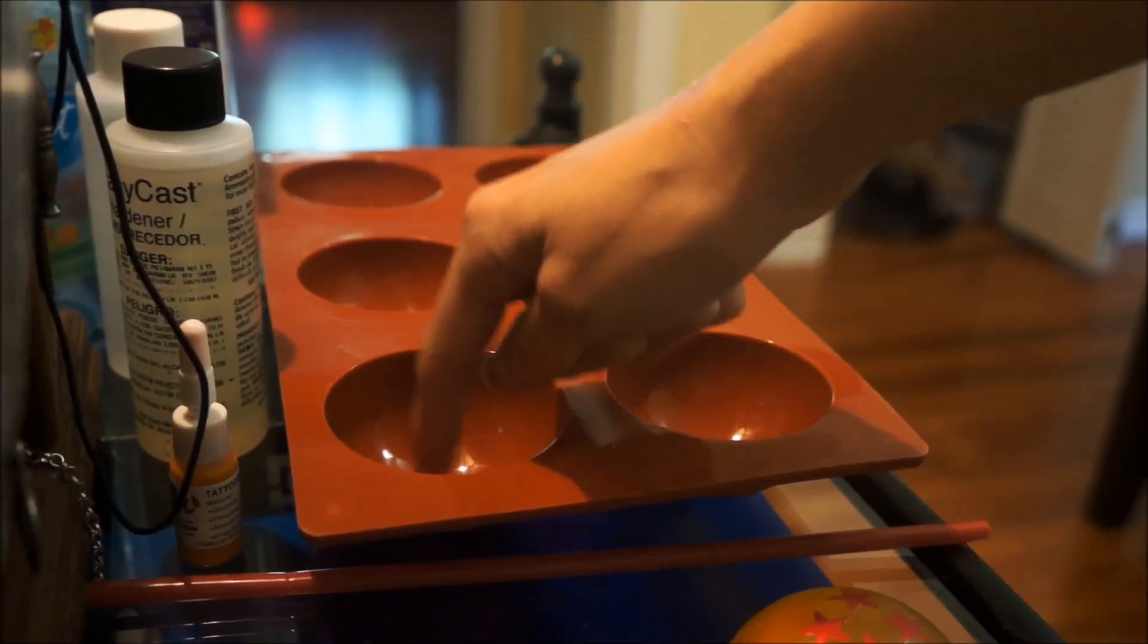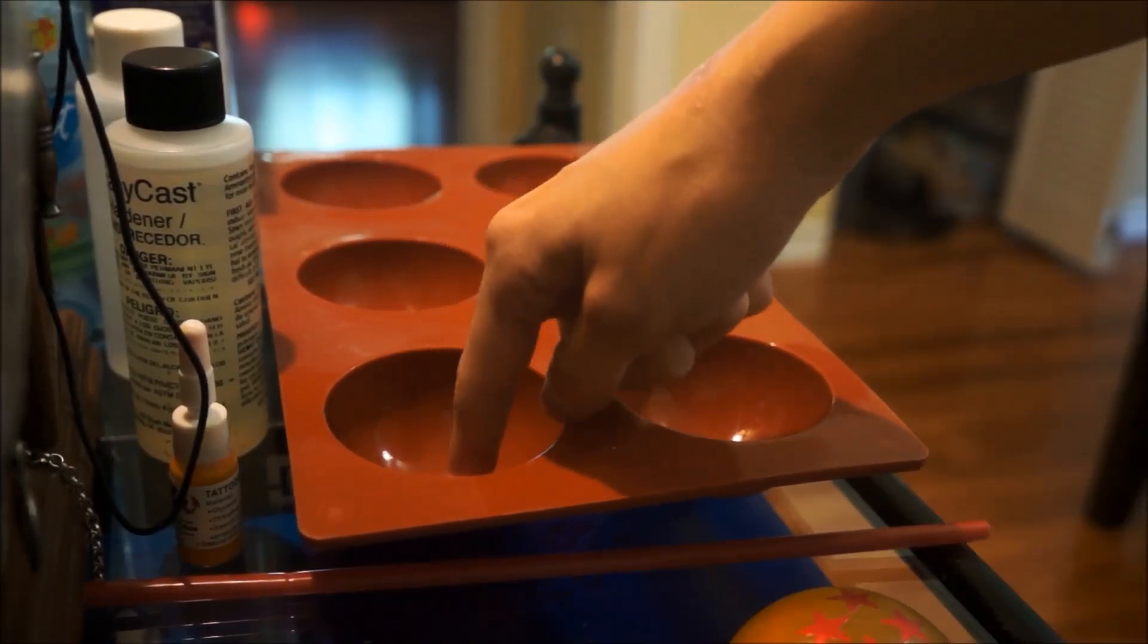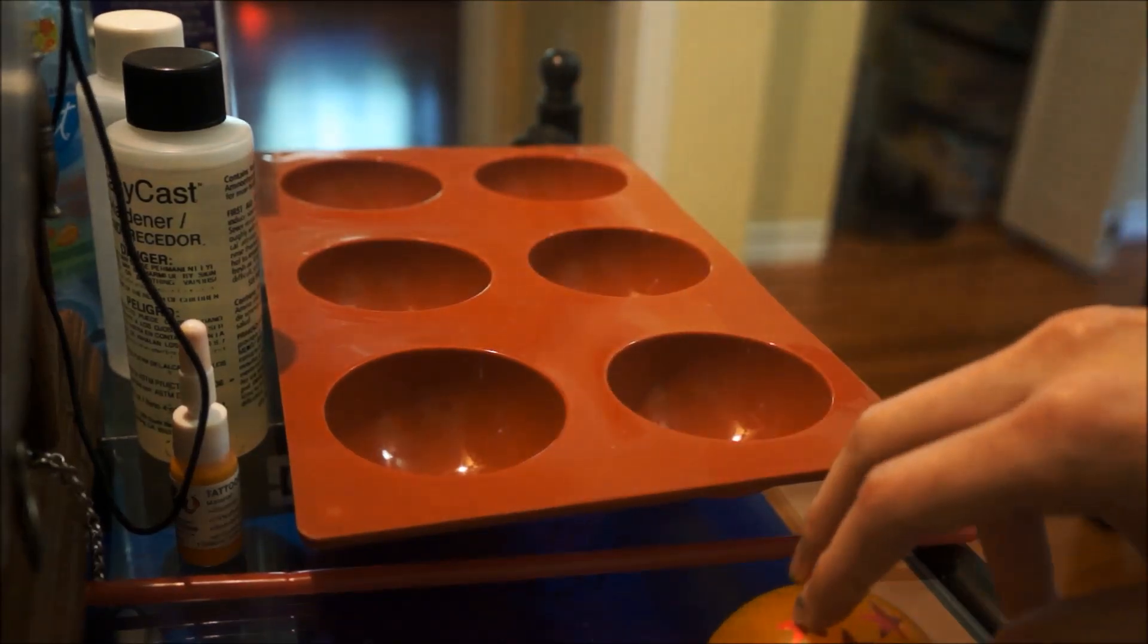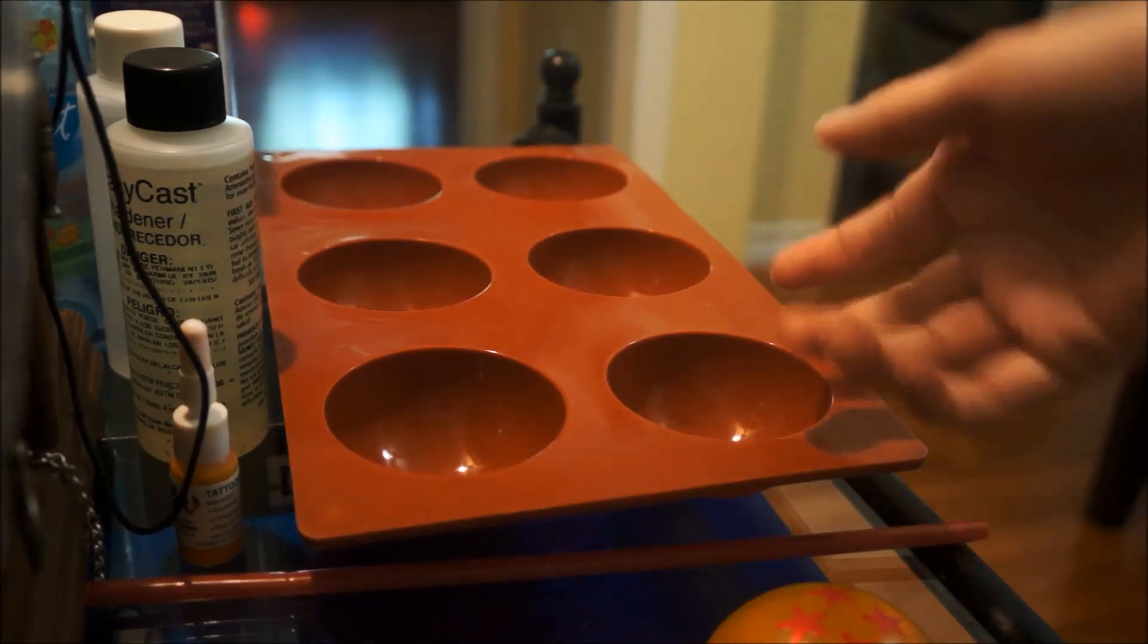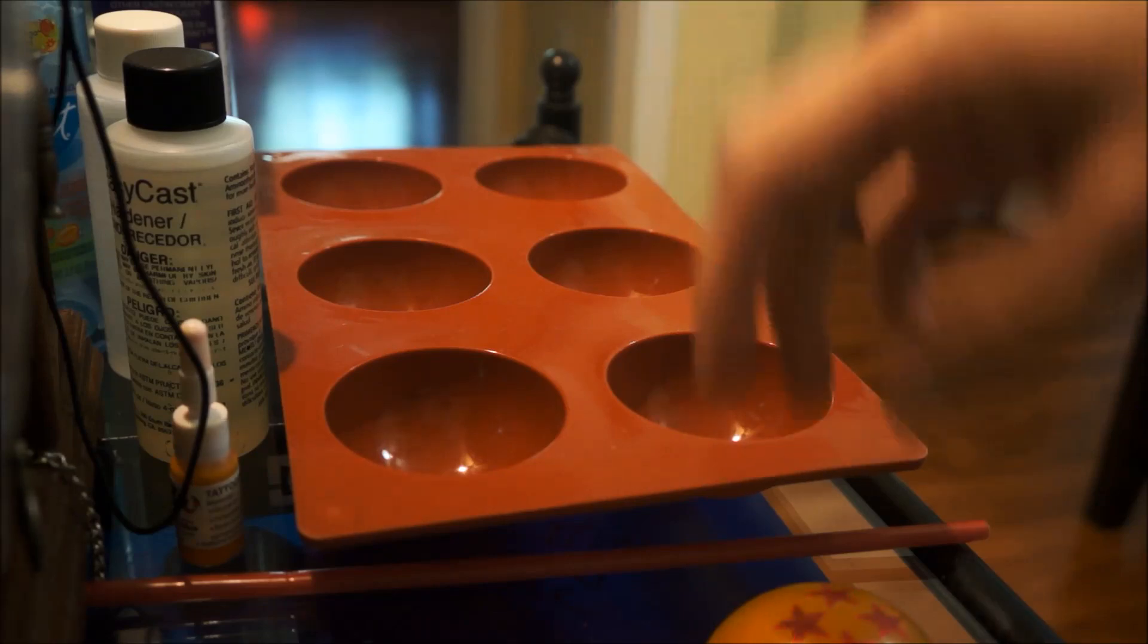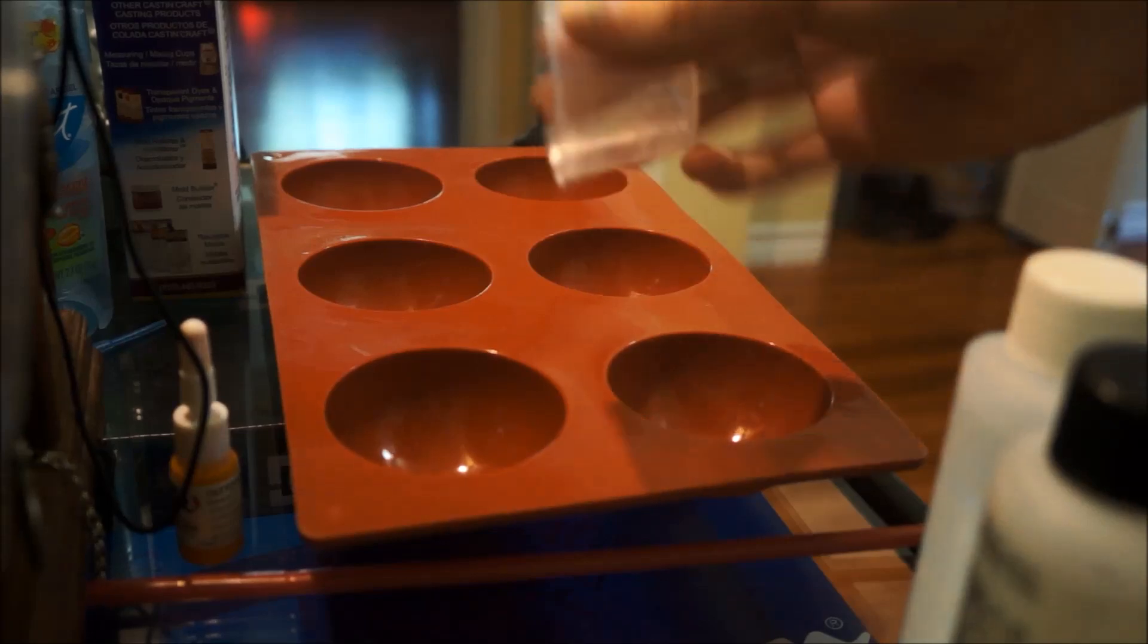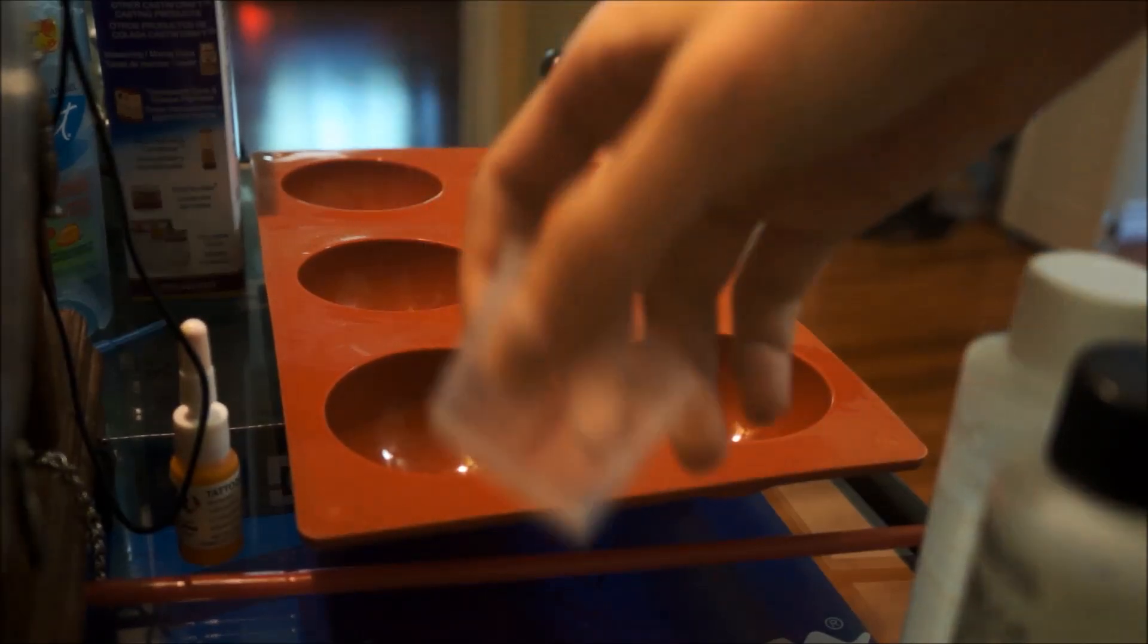We're going to fill this with resin about a fourth of the way full, let it dry, and then we're going to put the stickers on top of that. Then we can fill up the rest of the way. So I'm going to go ahead and pour and mix my resin and then I'll pour it in and show it to you guys.